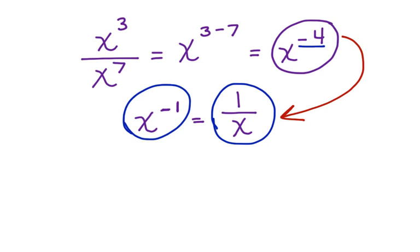Now let's look at how to change x to the negative 4th into the proper form. First, we have x to the negative 4th, and we can rewrite that as 1 over x to the 4th. This is our final answer.